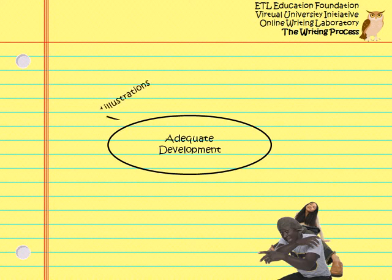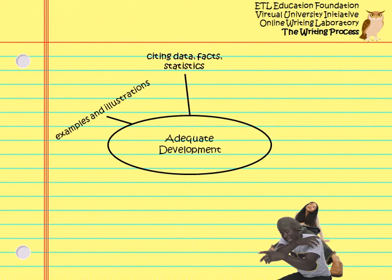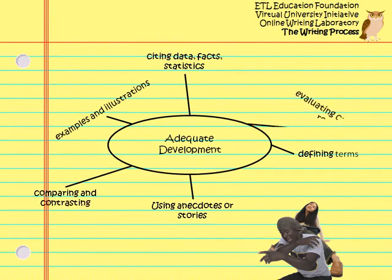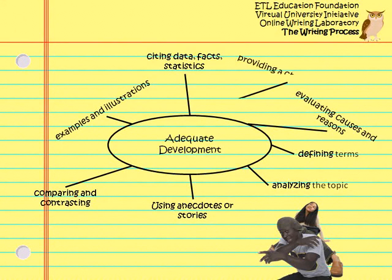You can develop your paragraph topic in several ways. Common ways include the use of examples and illustrations, citing of data, facts, and statistics, using an anecdote or story, defining terms, comparing and contrasting, evaluating causes and reasons, analyzing the topic, and providing a chronology.